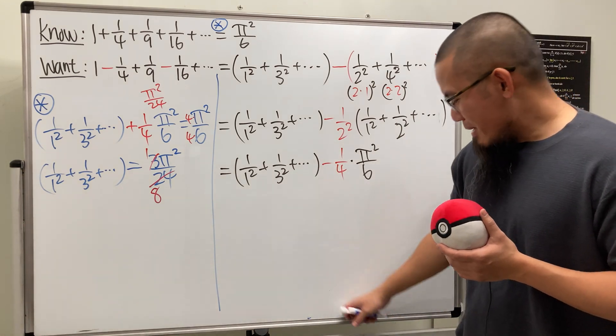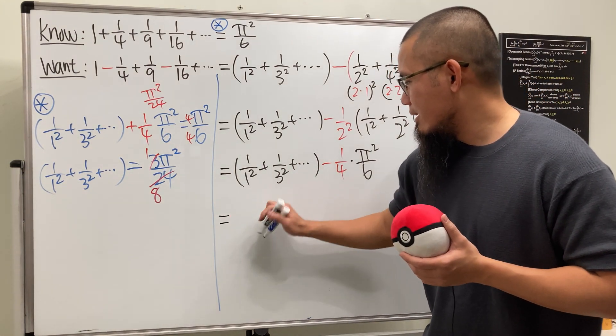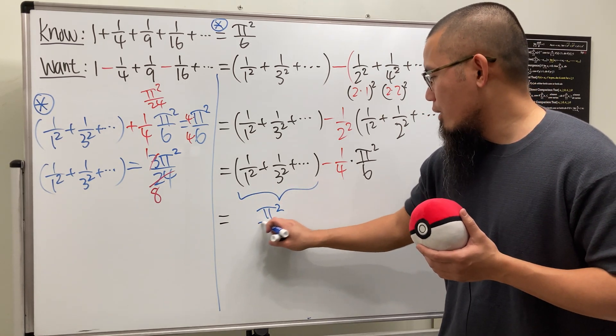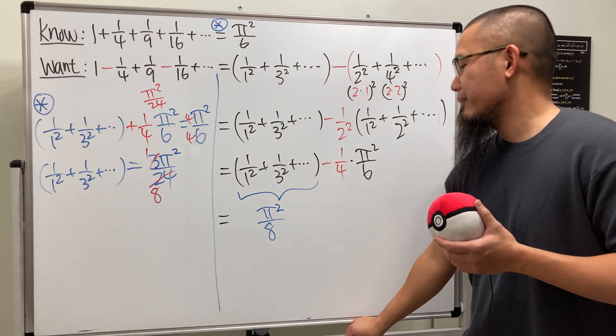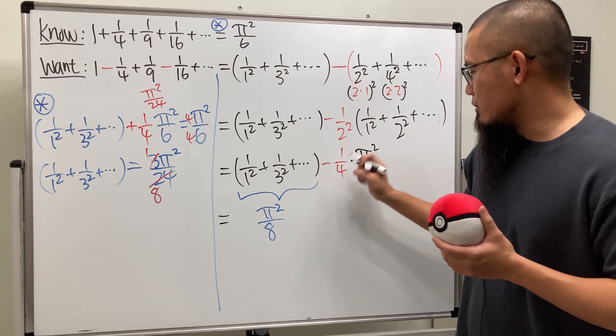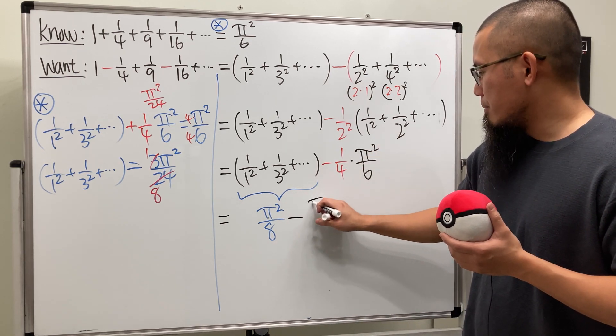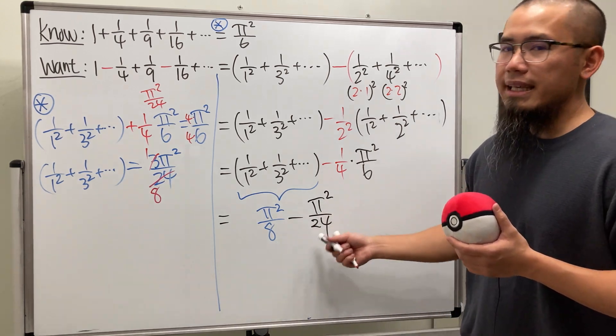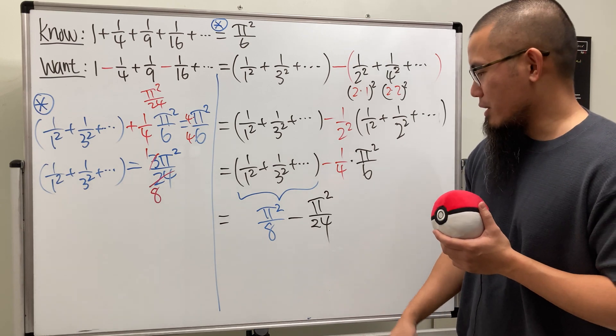So we can come back here, and then I will just write this down. This is just equal to pi squared over 8. All right, and then of course, this is just going to be minus pi squared over 24. I know, 8 and 24. Rest in peace, Kobe Bryant.